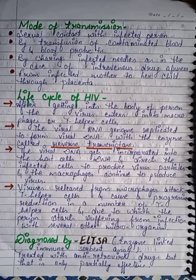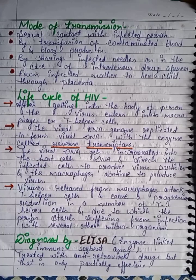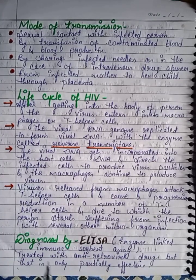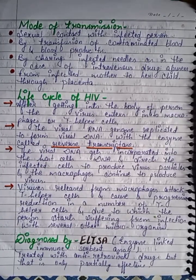Due to reduction in T helper cells, the person starts suffering from infections. AIDS is diagnosed by the ELISA test. It can be treated with anti-retroviral drugs, but this treatment is only partially effective, not fully effective.